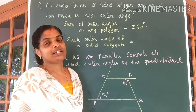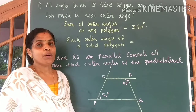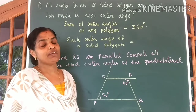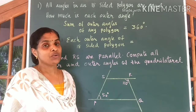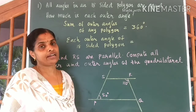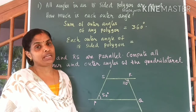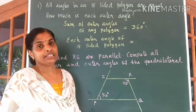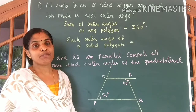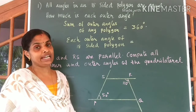Hi kids, welcome to the 4th part of polygons. In our previous class, we saw the sum of exterior angles of any polygon to be equal to 360 degrees. Now we have some problems using that idea.